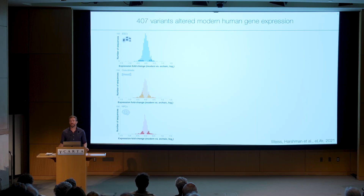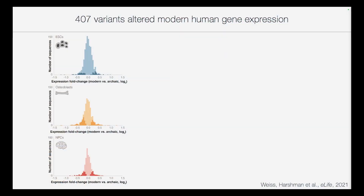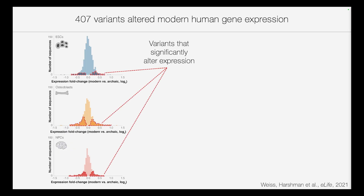Let's start by focusing on the 14,000 variants that emerged in modern human evolution and separate all modern humans today from other lineages. The distribution of their effects across different cell types tends to be centered around zero, suggesting that most variants do not have a significant effect on expression, which makes sense given how close these human lineages are. But we do find 407 genetic variants with a significant effect on expression — either the modern human version increases or decreases expression. In fact, in some cases a single nucleotide change is enough to double the expression of a gene.